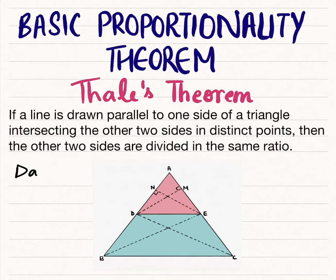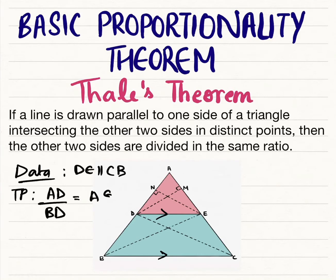So our data is that DE is parallel to CB, and we need to prove that AD by BD is equal to AE by EC.